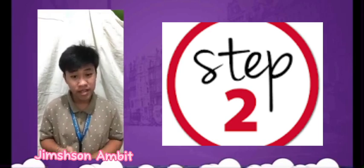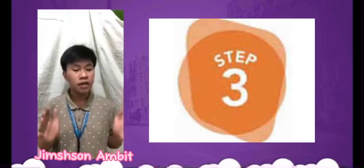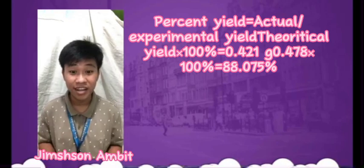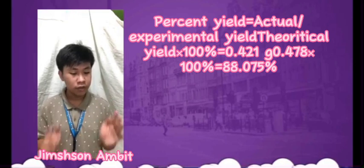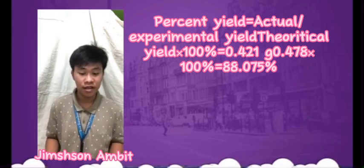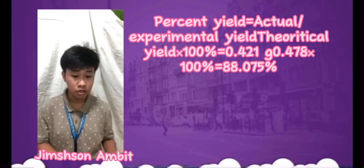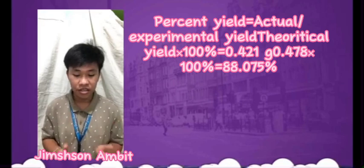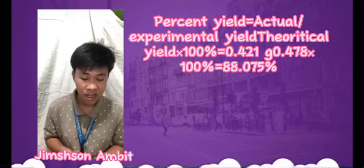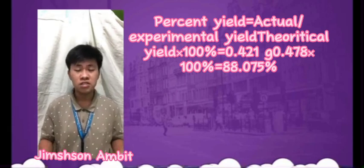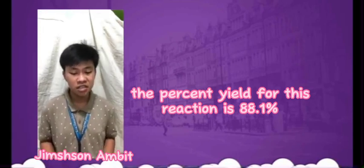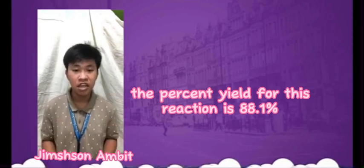So our percentage yield should be less than 100%. Step 3: Plug the yields from step 1 and step 2 into the percentage yield formula and calculate the percentage yield. The formula is: percent yield = (actual or experimental yield ÷ theoretical yield) × 100%. So: 0.421 grams ÷ 0.478 grams × 100% = 88.075%. Rounded to one decimal place, the percentage yield for this chemical reaction is 88.1%.